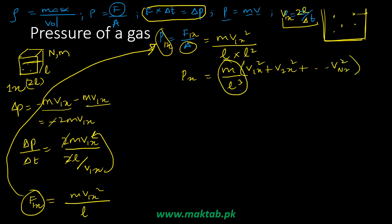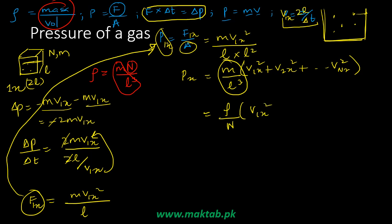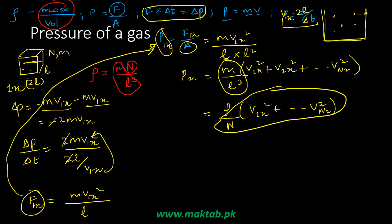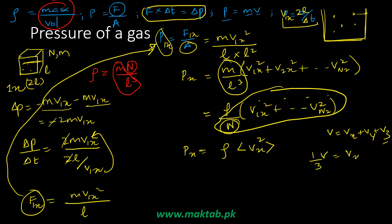We have m/L³ multiplied by the sum of all x-direction velocities squared. Writing this in terms of density: total mass equals total number of molecules times mass of each molecule divided by volume, so m/L³ = ρ/N. Dividing all velocities by N gives the mean square velocity in the x-direction. Since vₓ, vy, and vz are all equal, the total mean square speed v² = 3vₓ², so we can write P = ρv²/3.